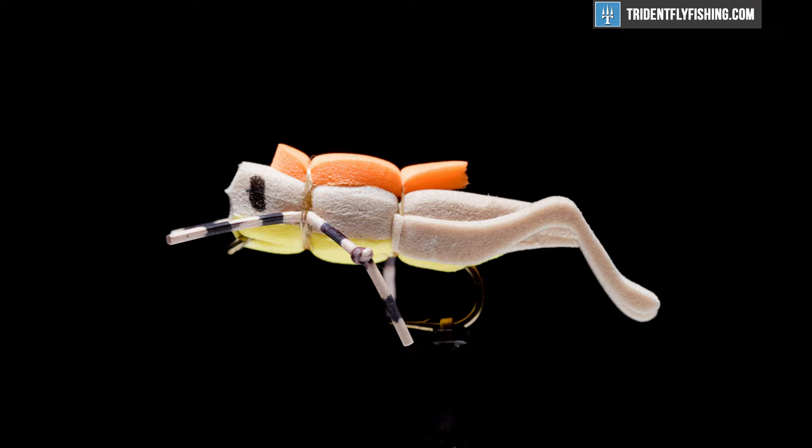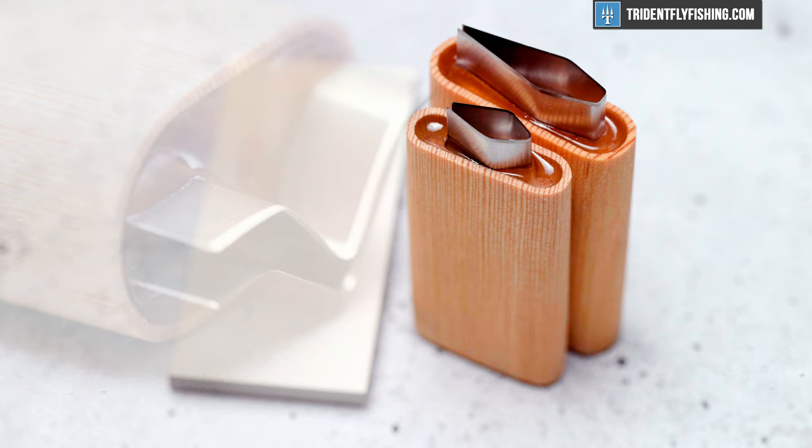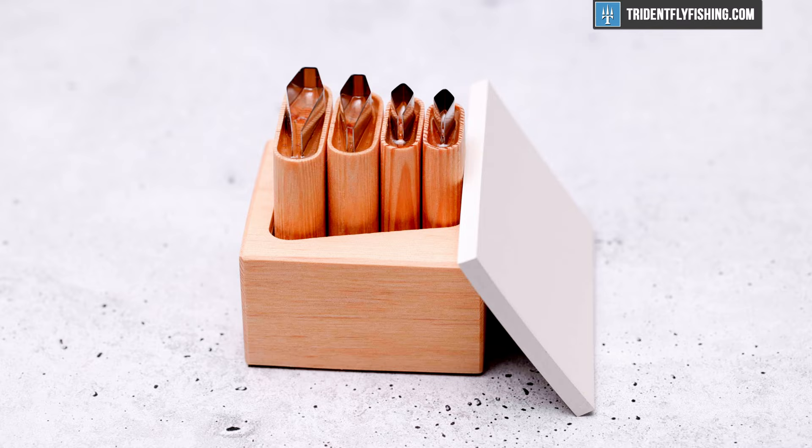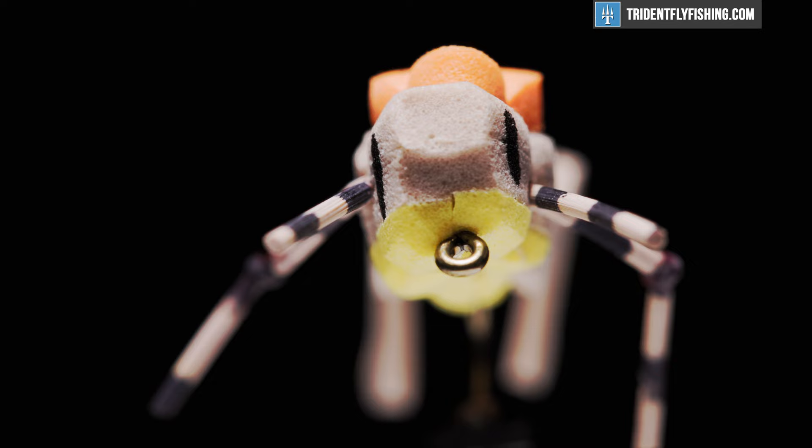It utilizes a foam body which is easy to form using the River Road Creations Cutters. These cutters are available in either a two-piece set in various sizes containing a body cutter and an indicator cutter, or you can also purchase a large and small hook size set containing four cutters each.